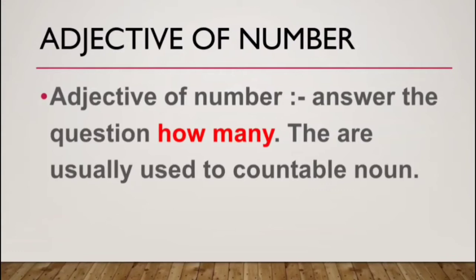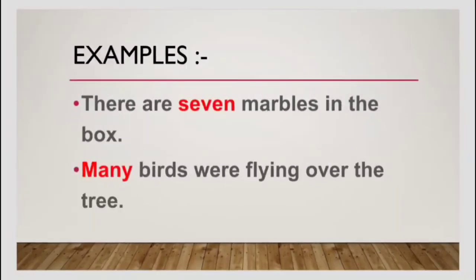These are examples of countable nouns. There are 7 marbles in a box — we play with marbles, so I can count marbles 1, 2, 3. So how many marbles am I having? Seven. Many birds were flying over the tree — there are many birds, it may be 2, 3, 5, 10 like that. So there are many, and it is known as a countable noun.